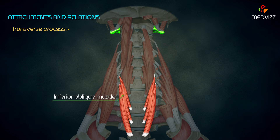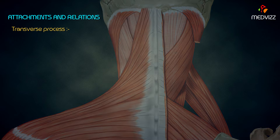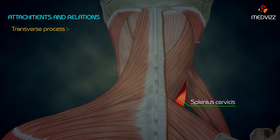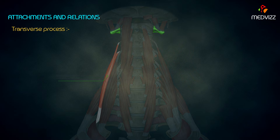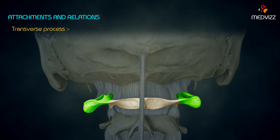The transverse process gives origin to several muscles: its upper surface anteriorly gives origin to rectus capitis lateralis, upper surface posteriorly to superior oblique muscle, lower surface of the tip to inferior oblique muscle, and the lateral margin and lower border give origin to levator scapulae. The posterior tubercle of the transverse process gives origin to splenius cervicis and scalenus medius.